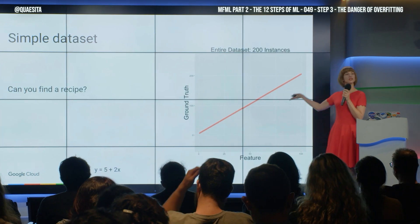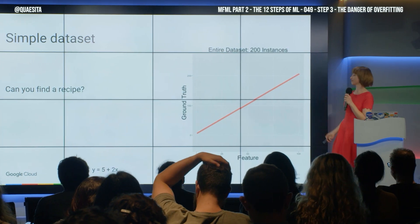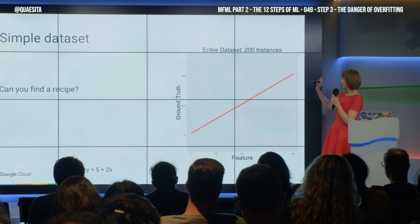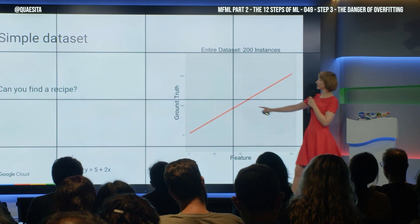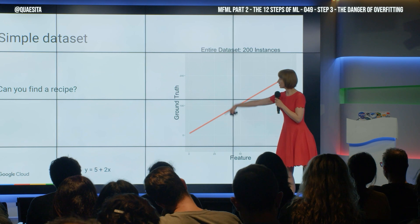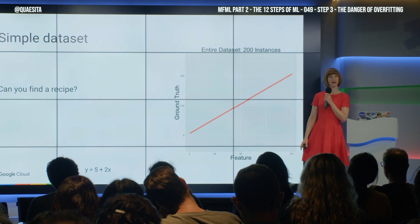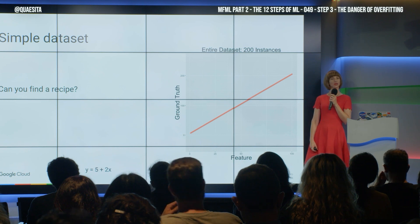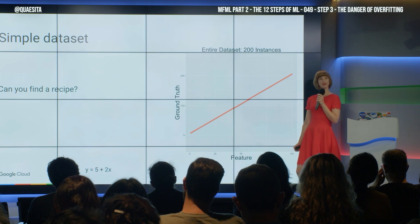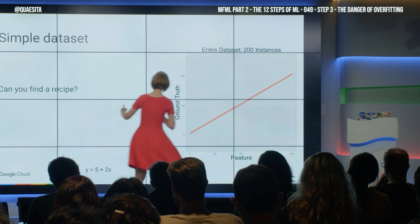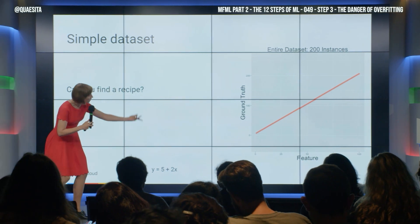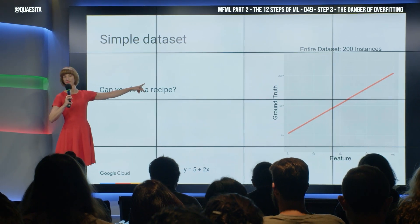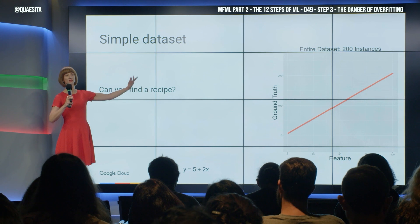Here we have a deterministic application. We have a feature here on the x-axis, 0 to 100, and our job is to use the feature to predict the ground truth, 0 to 200 over there. Can we do it? Can we find a recipe that takes us from the feature to the ground truth? That recipe is so hidden — all we got to do is take the feature, double it, and add five, and we're good to go. And as long as we do that, there'll be no mistakes.